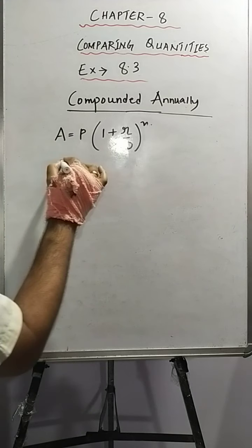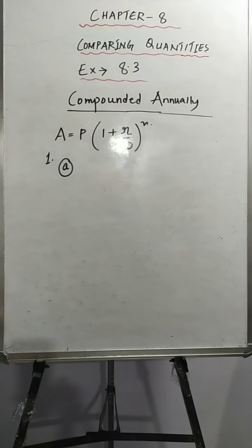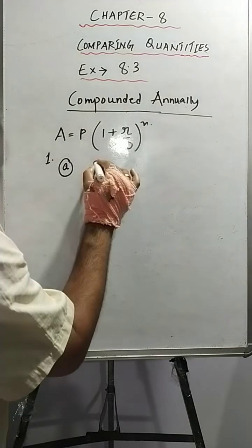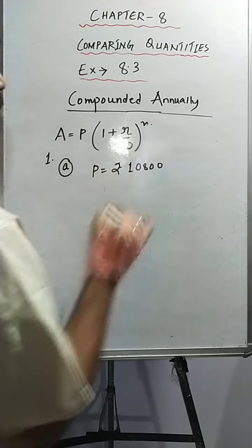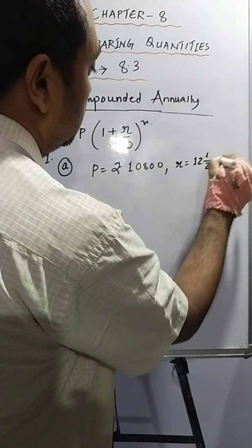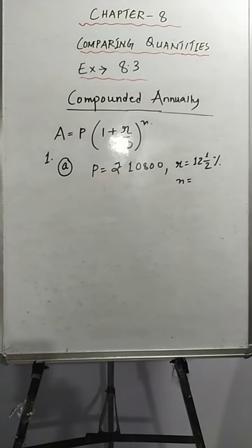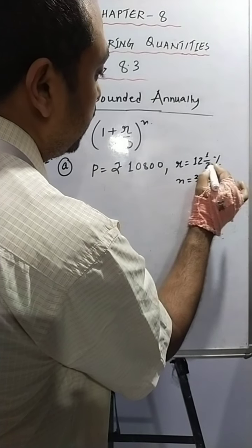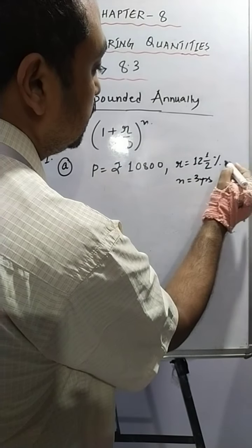Now let's do part A of question number one. It says: calculate the amount and compound interest on rupees 10,800. The principal is 10,800, the rate is 12 and a half percent per annum, and n is 3 years. It is written 'compounded annually,' so we will use the annually formula: A = P(1 + r/100)^n.